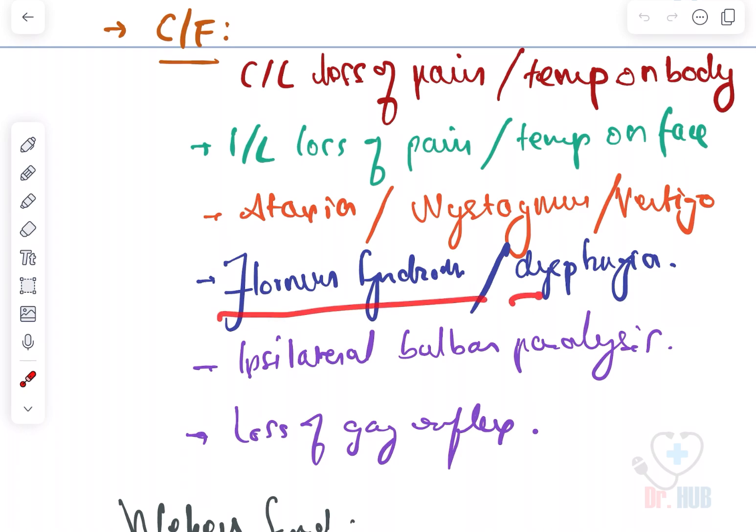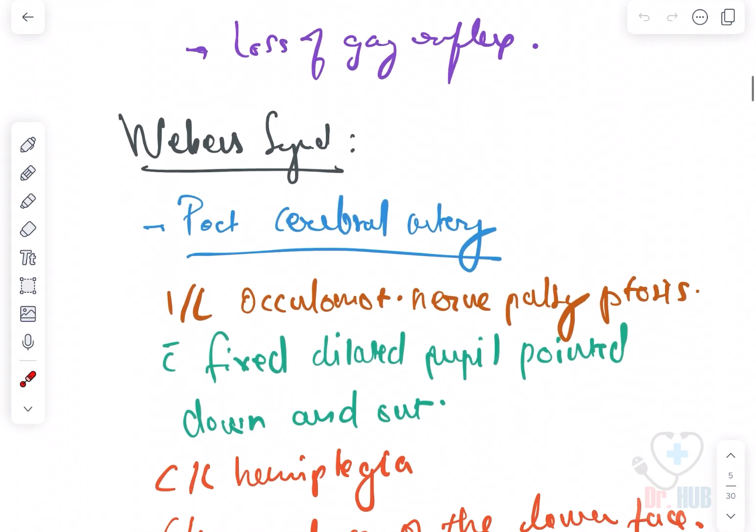There's Horner syndrome and dysphagia, ipsilateral bulbar paralysis, as well as loss of the gag reflex.